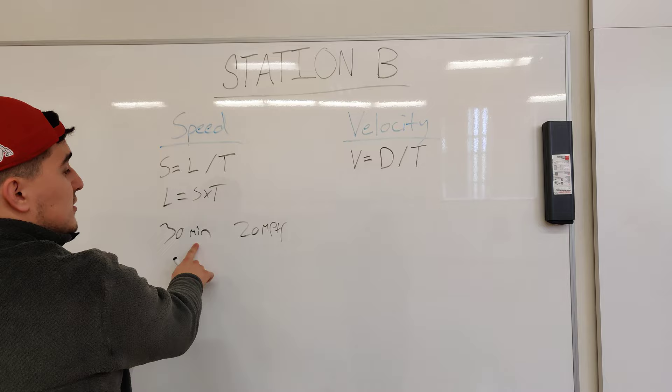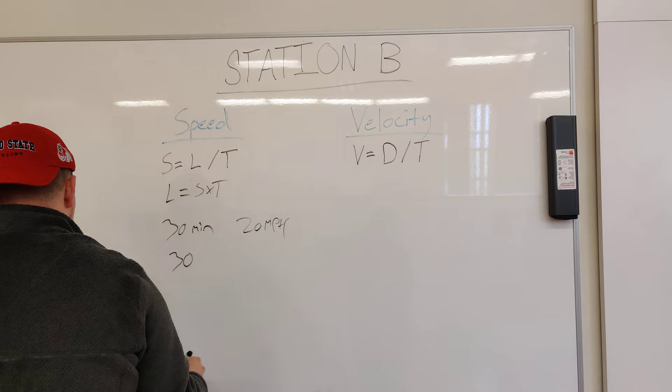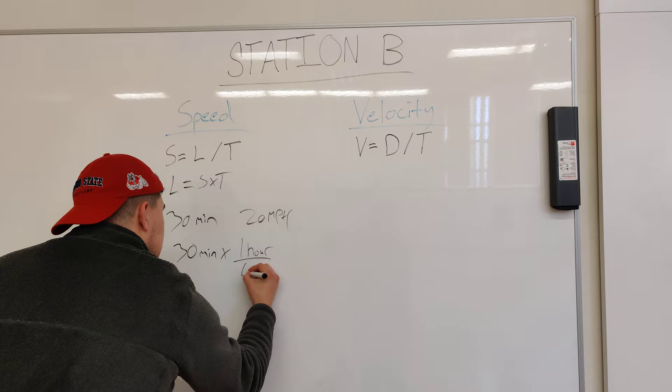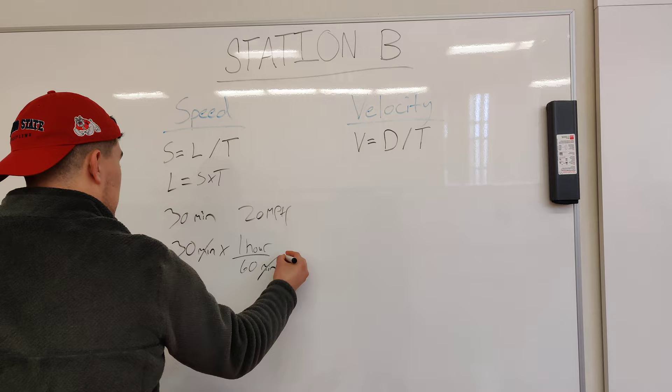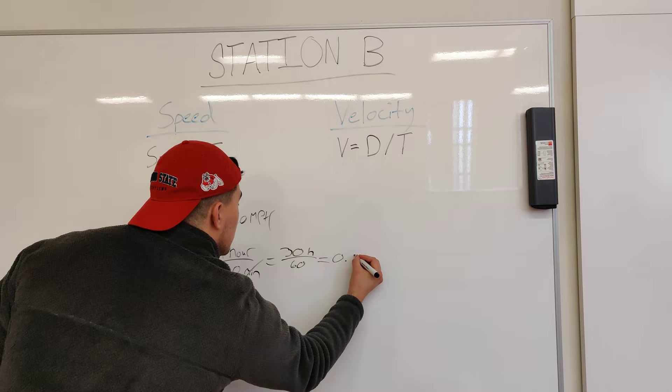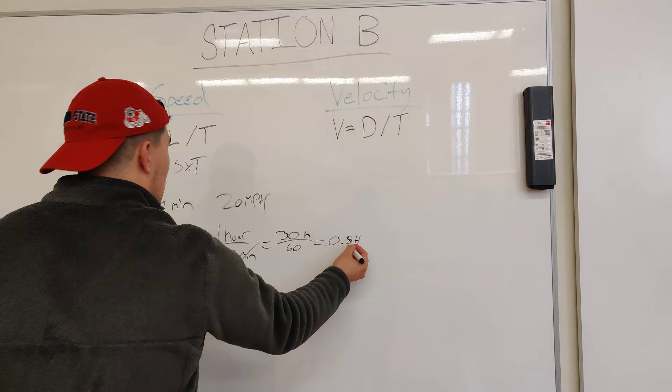First, we have to convert minutes to hours so we can work with the equation of 20 miles per hour. To convert, we go 30 minutes times 1 hour divided by 60 minutes. These cancel out. Move the variables over: 30 hours over 60, which equals 0.5 hours.